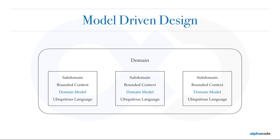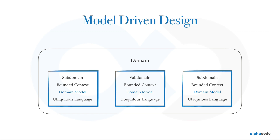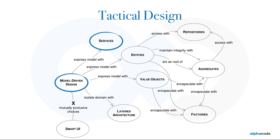Each bounded context has its own ubiquitous language. For example, if the world is your domain, then countries are your bounded contexts, each country has its own ubiquitous language, and the map of the country would be your domain model. Everyone talking about microservices says: design your microservices around bounded contexts. In reality, each bounded context will have its own microservice — that's why every bounded context is expressed with its own microservice. So all of these will be your services. A design implemented using domain models is called model-driven design.